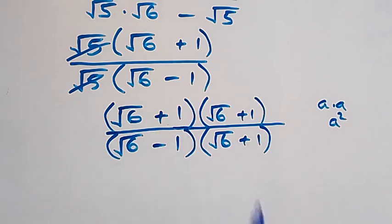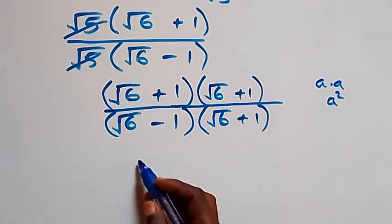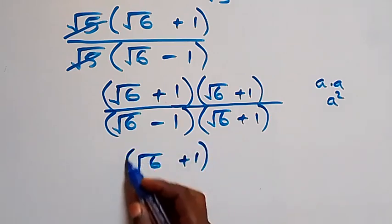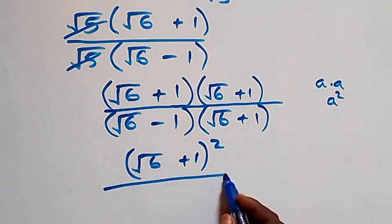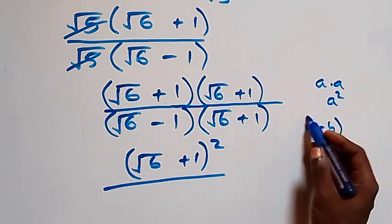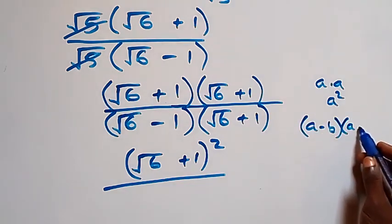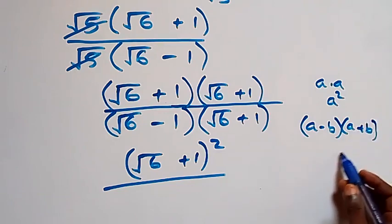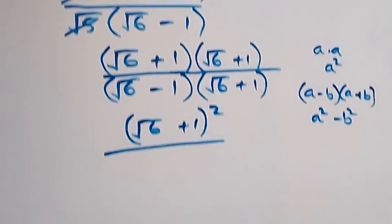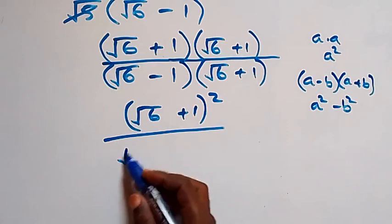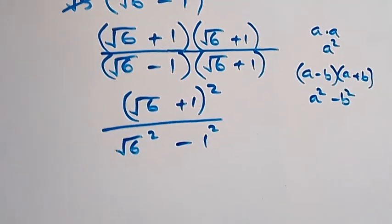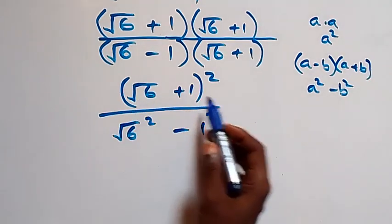The numerator becomes (root six plus one) squared. The denominator uses the identity (a minus b)(a plus b) equals a squared minus b squared, giving us root six squared minus one squared.